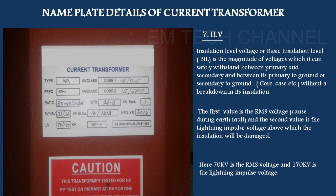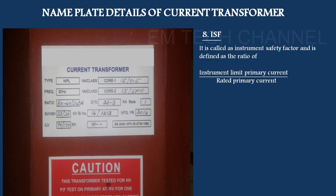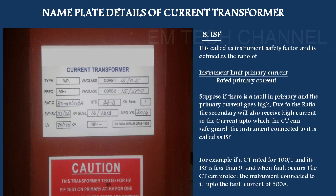ISF is the instrument safety factor. This is the ratio of instrument limit current to rated primary current. If there is a fault in the primary, the primary current increases. The CT secondary also increases proportionally. To protect the connected instruments, the ISF limits this. With a lower ISF value, the instrument is better protected from high fault currents, so instruments like meters are not destroyed during fault conditions.